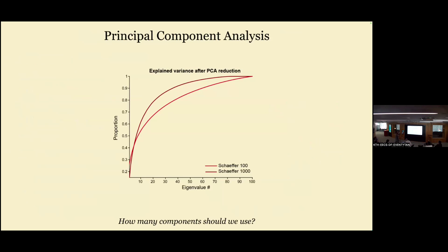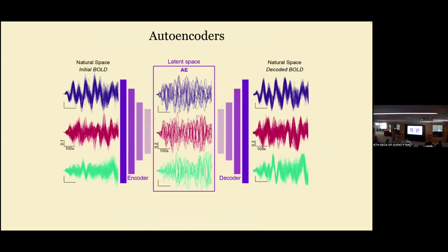I applied the Schaefer parcellation with 100 or 1,000 regions and looked at how many eigenvalues — components — are needed to explain how much variance. But PCA doesn't really tell me which dimension to stop at, or how much variance from this basically unpreprocessed data I actually want to explain. So another approach we now use is autoencoders.